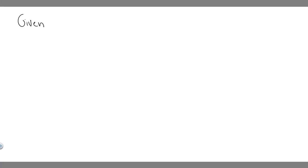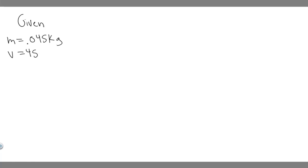So let's go ahead and solve this problem. Let's first write down what we're given. We're told the mass of the golf ball, so M equals 0.045 kg. We also know the velocity is 45 meters per second, and then we also know the time — the time is equal to 3.5 times 10 to the minus 3 seconds.